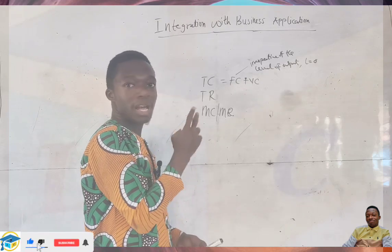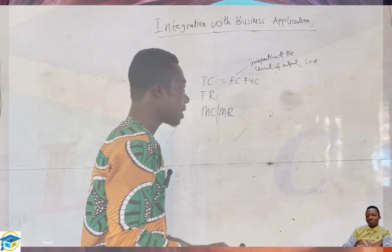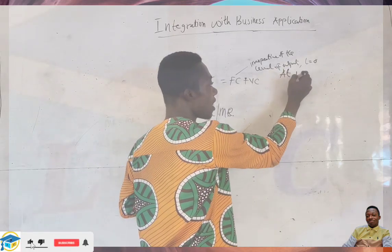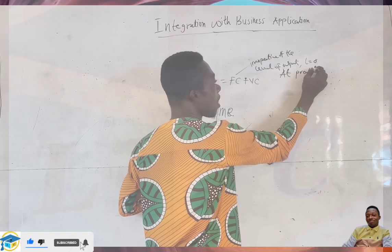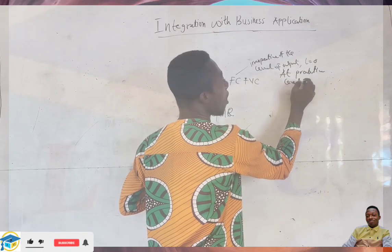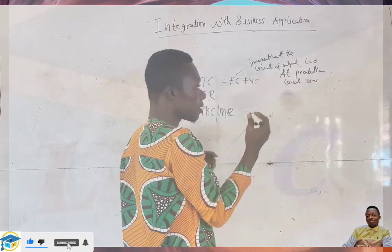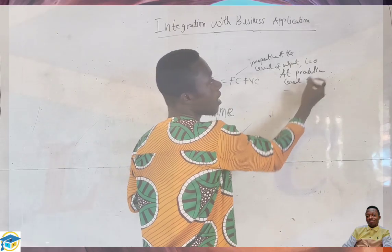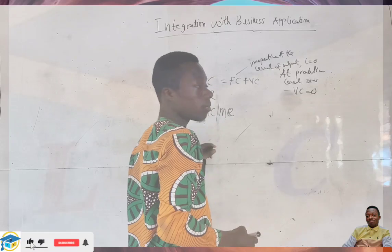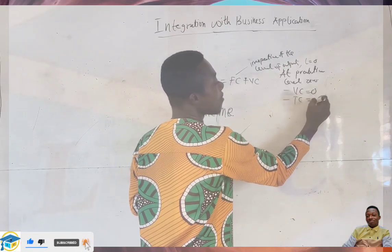Total cost equals fixed cost plus variable cost. We established fundamentally that at the production level of zero, three things happen: one, our variable cost is equal to zero; two, our total cost is equal to our fixed cost.